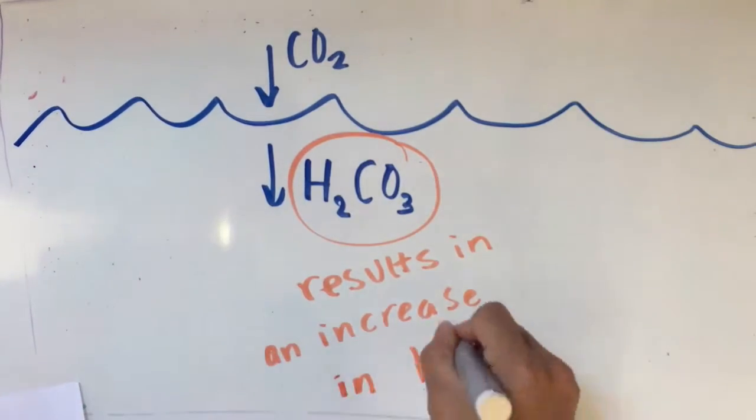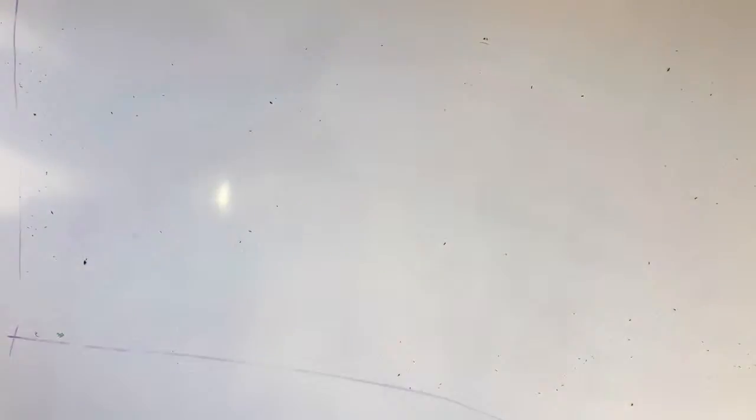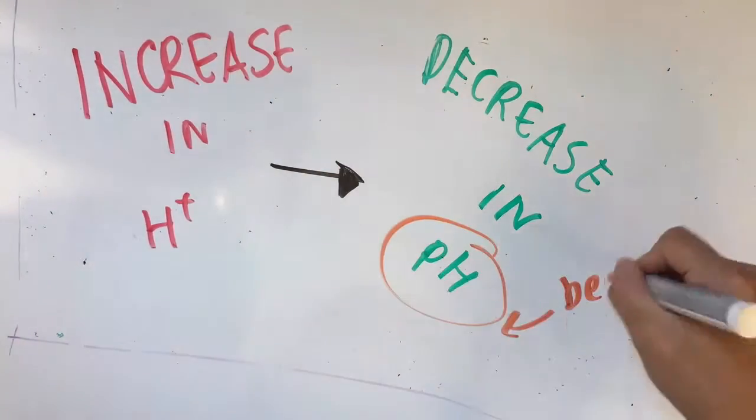This results in more hydrogen ions, as carbonic acid naturally breaks down into bicarbonate and carbonate. The increase in hydrogen ions reduces the pH, which means the ocean is becoming more acidic.